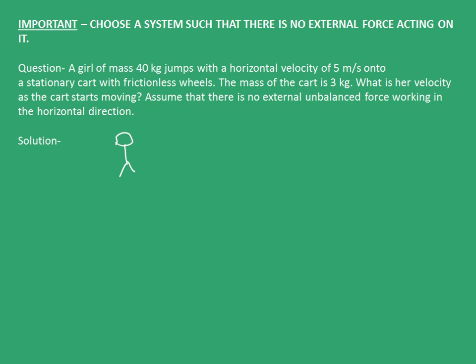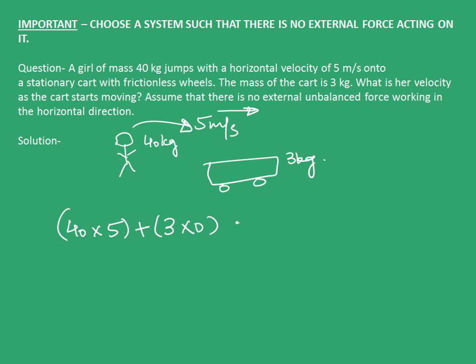We have this girl whose mass is 40 kg and a cart whose mass is 3 kg. The girl jumps onto the cart with a velocity of 5 m/s in the right direction. The initial momentum of girl is 40 into 5, and the cart is 0 because it has no velocity initially. Finally, the cart and the girl become a single system with total mass 40 plus 3 kg, and velocity V.